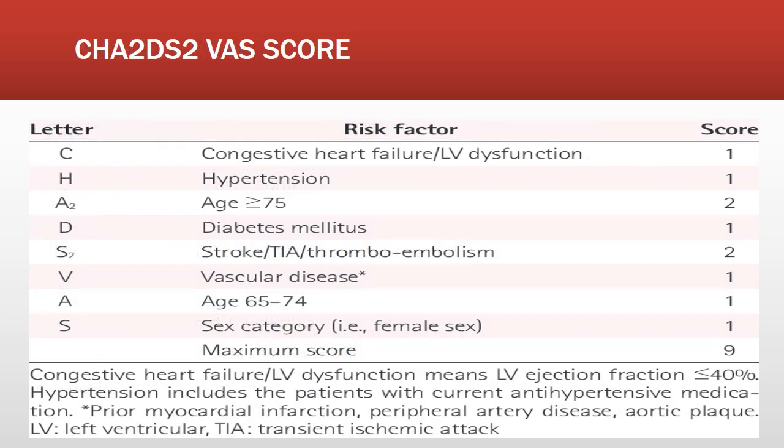The CHA₂DS₂-VASc score is calculated to determine whether anticoagulation is required. The components are: C for Congestive heart failure, H for Hypertension, A₂ for Age ≥75 years (score 2), D for Diabetes mellitus, S₂ for Stroke history (score 2), V for Vascular disease, A for Age 65–74 years, and Sc for Sex category female. Total score is 9. A score of zero requires only aspirin; a score of one requires warfarin or aspirin; a score of two or more requires anticoagulation therapy.